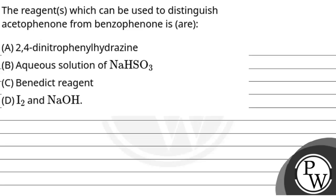Hello everyone, let's read this question. The question says the reagents which can be used to distinguish acetophenone from benzophenone are option A, B, C, D. And the key concept for this question is...